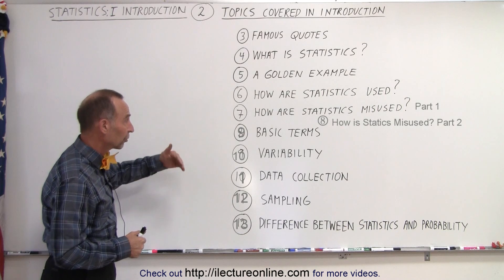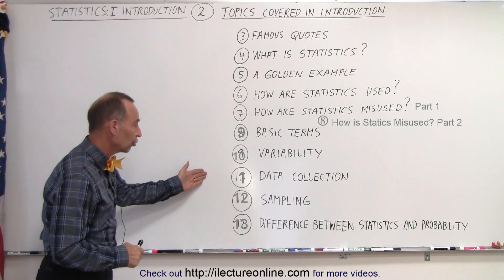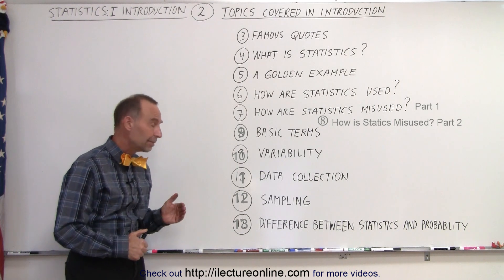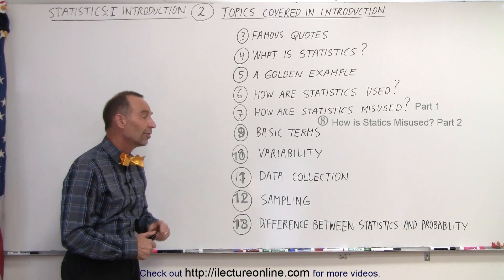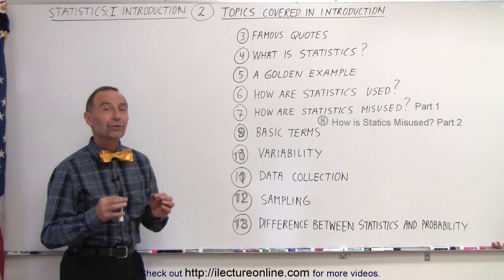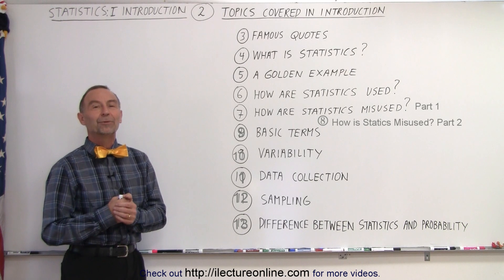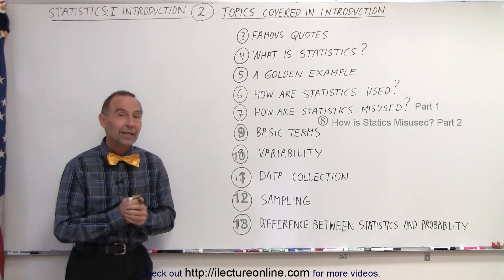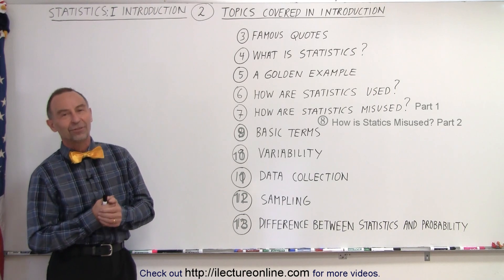We're going to learn some basic terms and talk about variability. We're going to show how data collection should be done, what sampling means, and finally, the difference between statistics and probability. You'll find out that's very difficult to define, and we're going to give that a valiant attempt. Those are the topics that are going to be covered in our first introductory chapter on statistics.